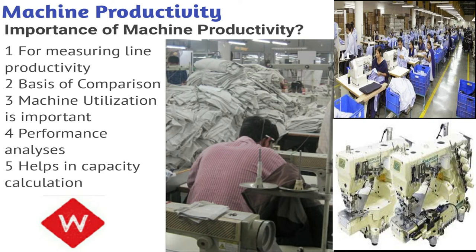If you know the machine productivity — for example, this machine produces 20 pieces per hour and another machine produces 30 pieces per hour — then you know that the second machine is much more utilized. The first one is better utilized, and the other is less utilized, so you need to improve it. I will share the improvement techniques in the next video.